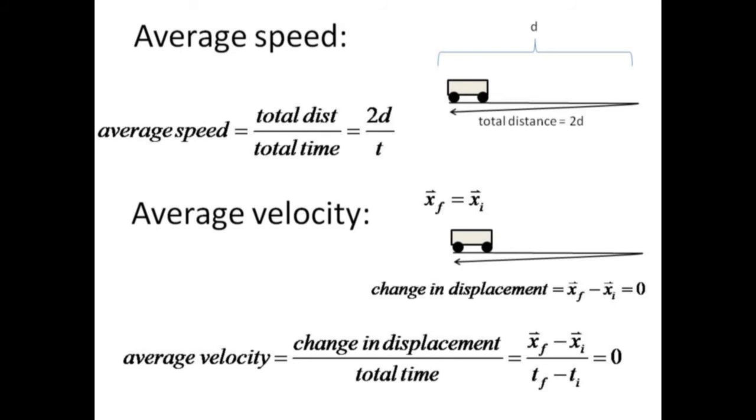Average velocity, on the other hand, is defined as the change in the vector displacement divided by the change in time. If the cart returns to its starting point, the change in displacement is zero, and the average velocity is thus zero.